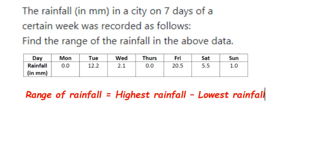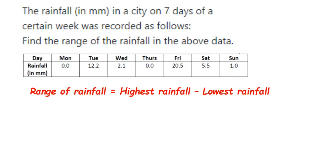Now if you look at the given data, the highest rainfall was on Friday, which was 20.5mm, and the least was on Thursday or on Monday — both days it was 0. So when you find out the range of rainfall,